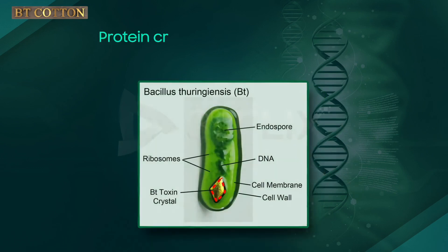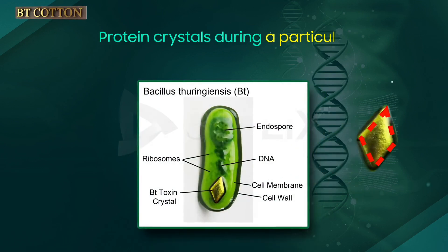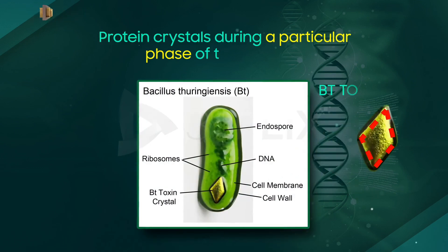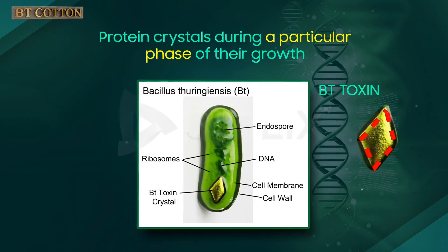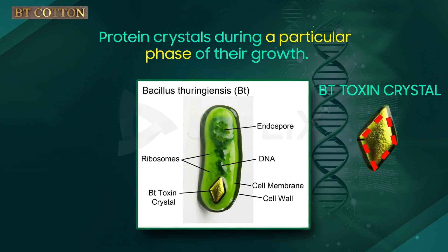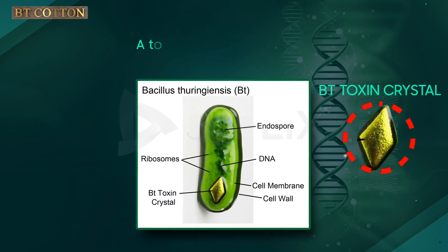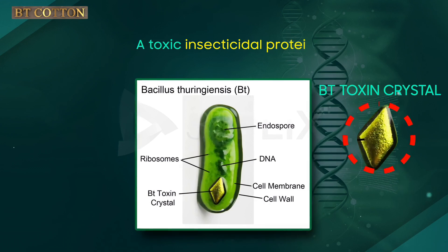Bacillus thuringiensis forms protein crystals during a particular phase of their growth. These crystals contain a toxic insecticidal protein.